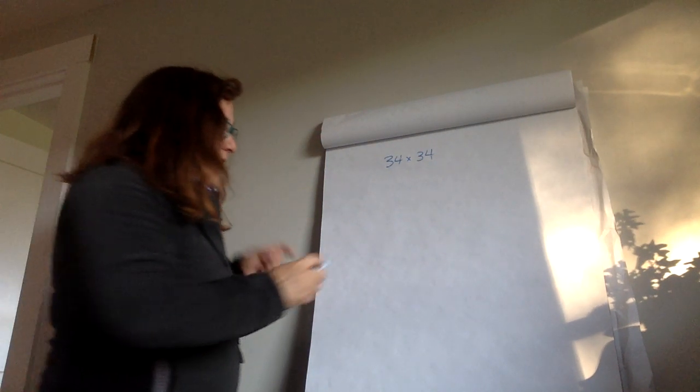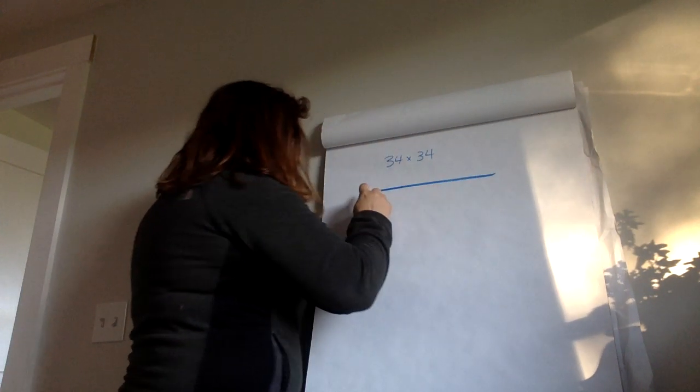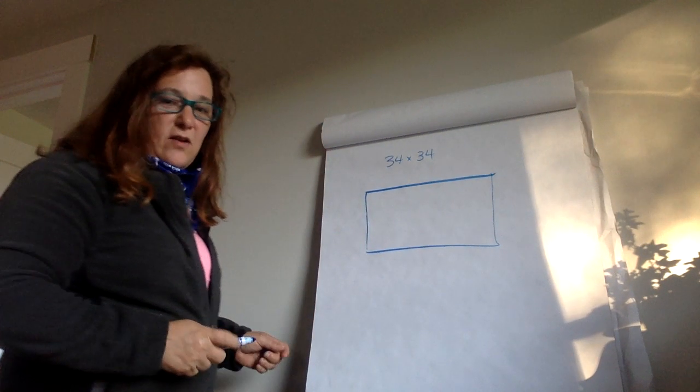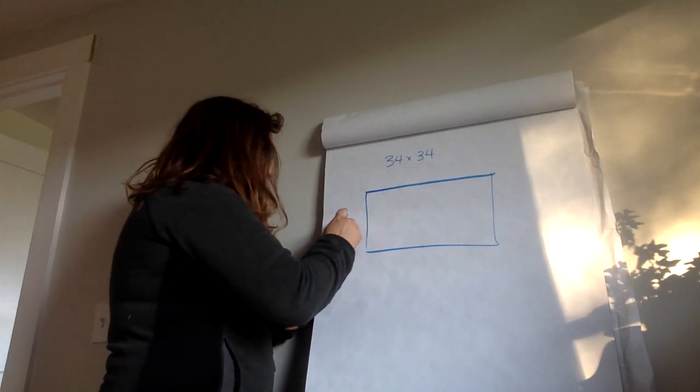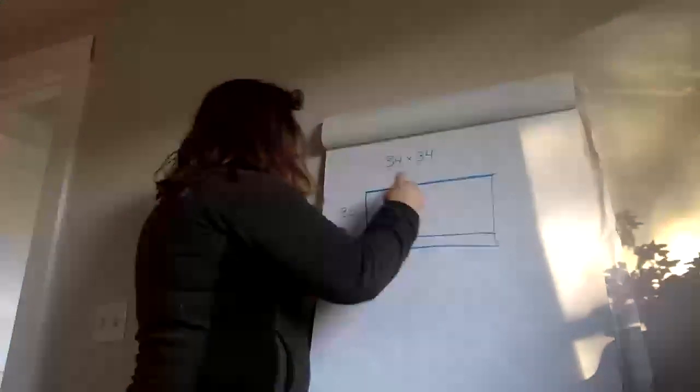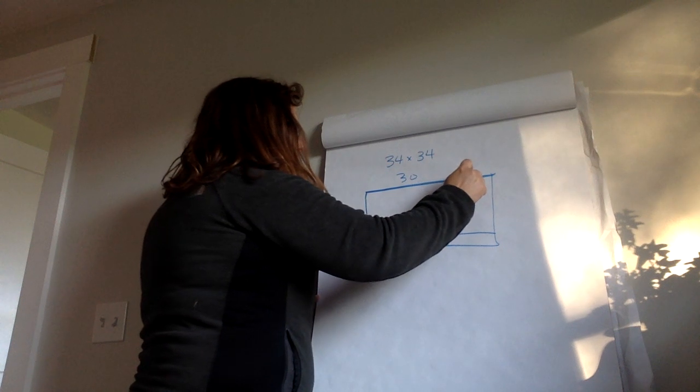I could draw an area model. So I would draw a rectangle here and 34 is 30 and 4 and 30 and 4.